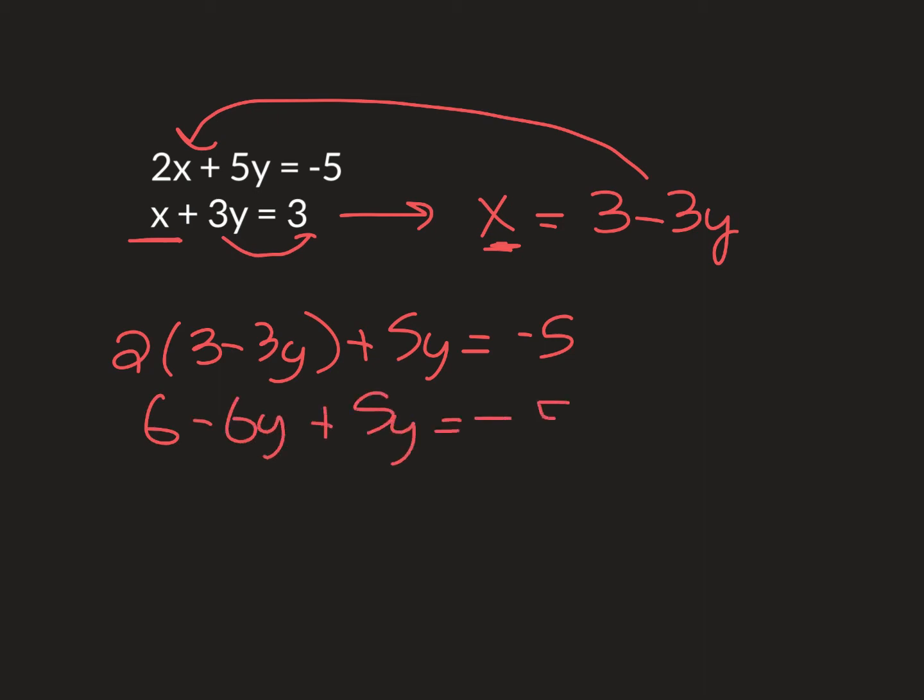Then I'm going to start moving stuff over. I have negative 6y plus 5y, that's negative y. I'm going to move the 6 right here to the other side, make that negative 11, which means y is going to be positive 11 when I work that out. So there's my y.